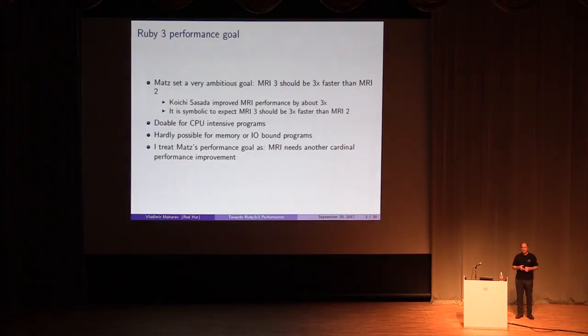As you know, Matz set up a very ambitious goal for performance of MRI version 3. MRI version 3 should be three times faster than version 2. Koichi did a great job improving performance for version 2 by about three times by introducing a bytecode virtual machine. So I guess it's symbolic to set up the same goal for Ruby 3 performance.